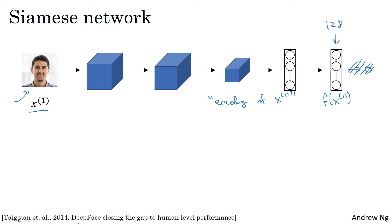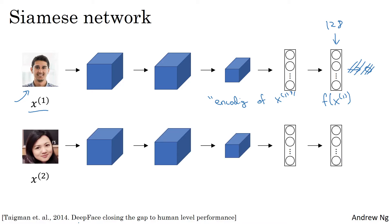The way you can build a face recognition system is then, if you want to compare two pictures, let's say this first picture with this second picture here, what you can do is feed the second picture to the same neural network with the same parameters and get a different vector of 128 numbers, which represents or encodes the second picture.